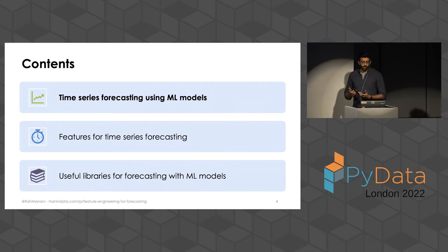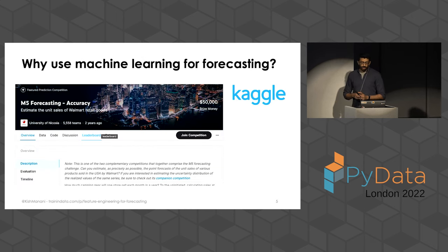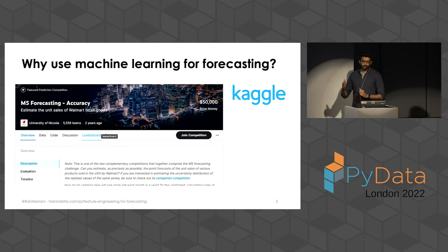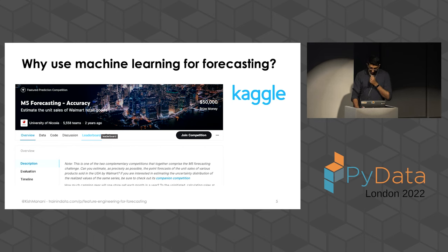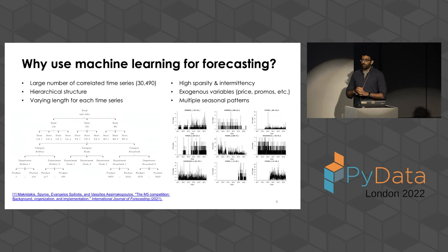I'm going to motivate why we would want to use machine learning for time series forecasting by way of an example. A couple of years back, there was one of these big forecasting competitions, the so-called M competitions — this was the fifth one, the M5 competition — and the challenge was to predict the future value of a set of retail products. The company was Walmart, and the reason it was interesting was the nature of the data: there were over 30,000 product-store combinations.